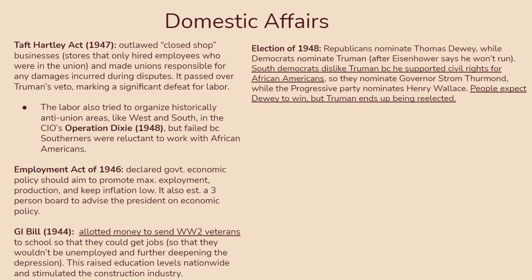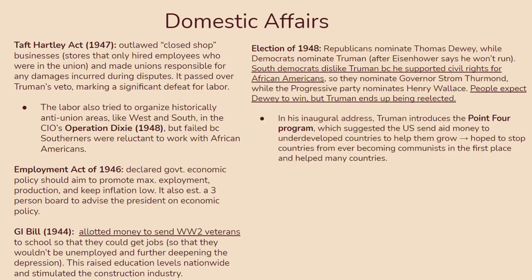In the election of 1948, Republicans nominated Thomas Dewey while Democrats nominated Truman after Eisenhower said he wouldn't run. Southern Democrats disliked Truman because he supported civil rights for African Americans, so they nominated Governor Strom Thurmond, while the Progressive Party nominated Henry Wallace. People fully expected Dewey to win, but Truman was actually re-elected. In his inaugural address, Truman introduced the Point Four Plan, suggesting the US send aid money to underdeveloped countries to help them grow so they would never become communist — and this actually ended up helping a lot of developing countries.